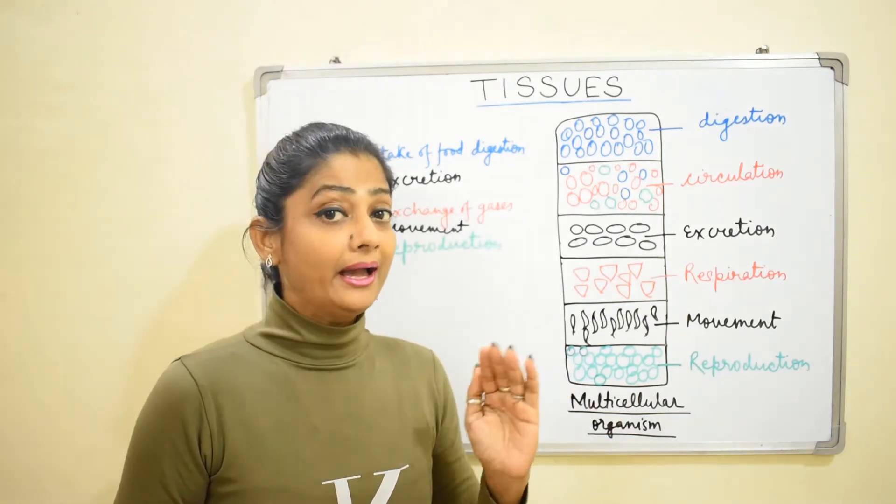But in multicellular organisms, the work is divided. Similar cells group together — they are made of similar structures and form a group. All the cells in a group work together to achieve a particular function. For example, some cells form groups that work specifically for digestion.